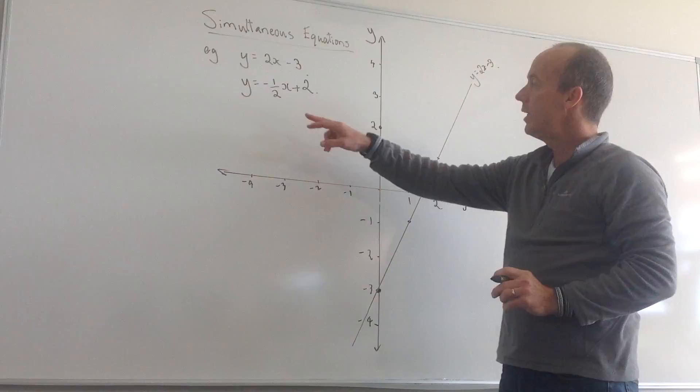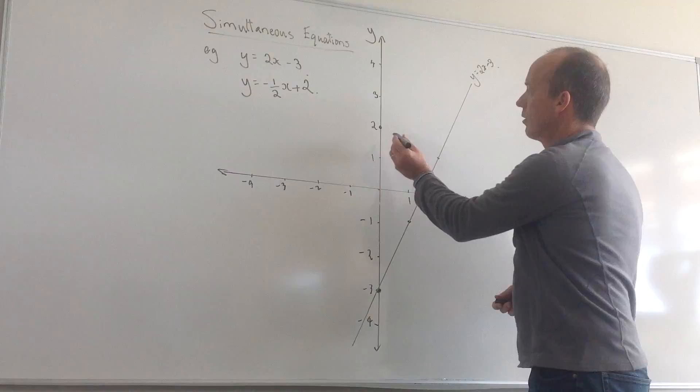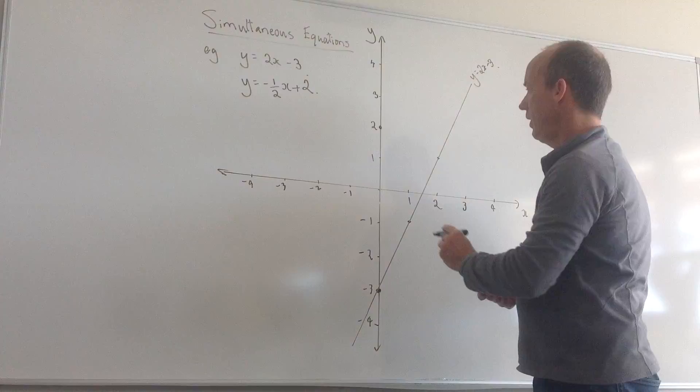It's got a gradient, the m is minus one-half. So if I go across 1, I've got to go down by one-half. Alternatively, I could go across 2 and down by 1, so I'm going to have another point there.